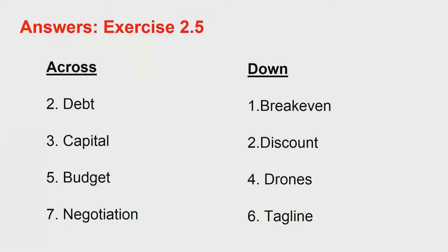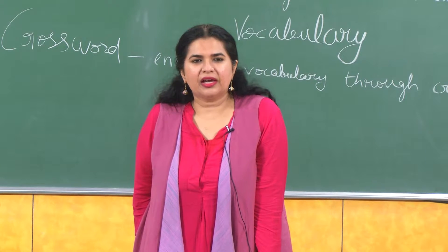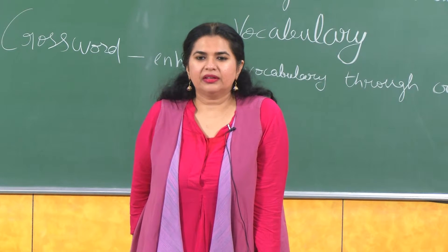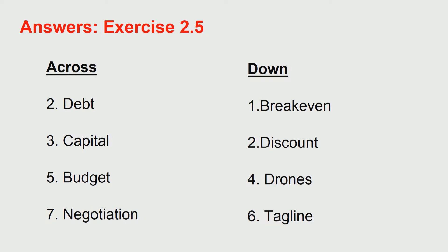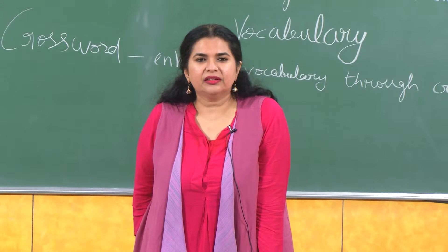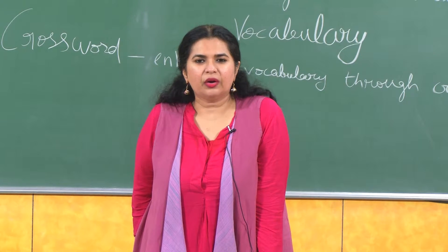These are your answers — I do not want you to spend too much time on this. This is just one example to show how crosswords can develop your vocabulary. The words across include: budget hotel — number 5 is the kind of hotel that gives you facilities at not-so-expensive prices. The downward words are: break even, discount, drones, and tagline. Try to use these words in the crossword and see how it works out.